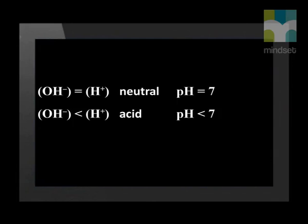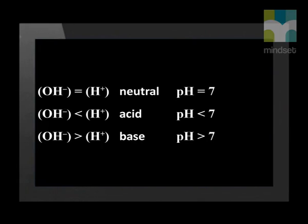If the concentration of hydroxyl ions is less than the concentration of hydrogen ions, then the substance is an acid and the pH is less than 7. If the concentration of hydroxyl ions is larger than the concentration of hydrogen ions, then the substance is a base and the pH is greater than 7.